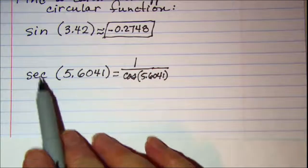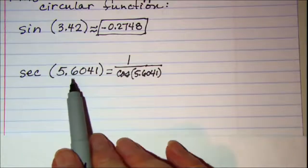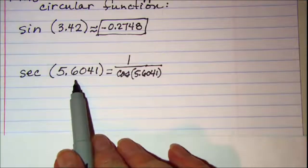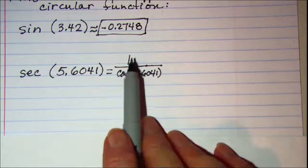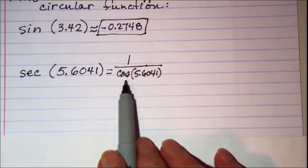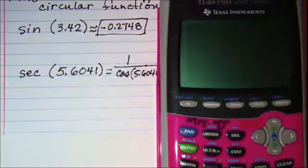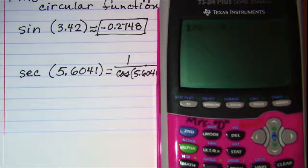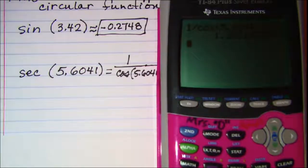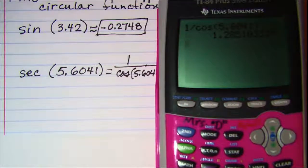So in order to calculate the secant of an angle we need to actually do 1 divided by the cosine of 5.6041, which gives me 1.2851.